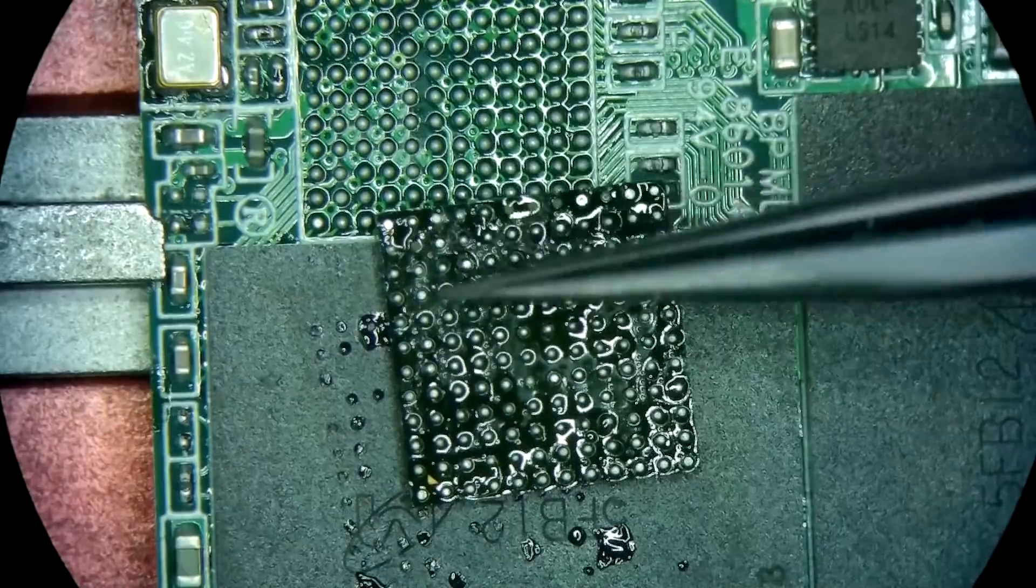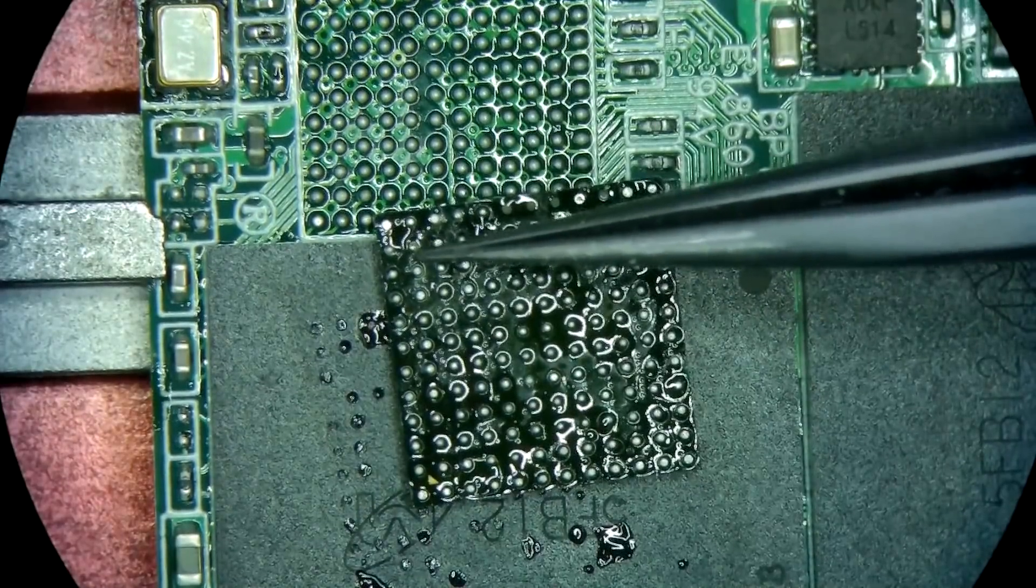We're going to go ahead and clean it up. Usually we can tell that there's corrosion by looking at the pad that it correlates to.